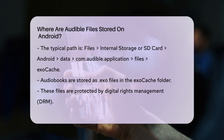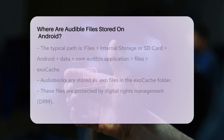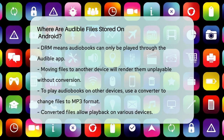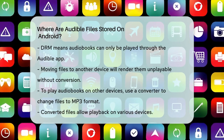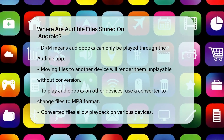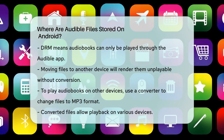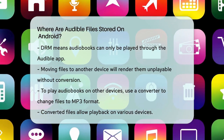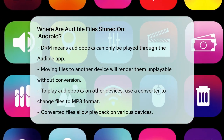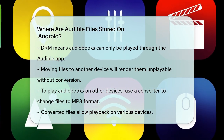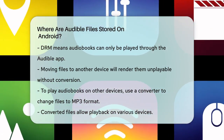However, if you need to move these audiobooks to another device or play them on a different player, you can use a converter to remove the DRM and convert the files to a more universal format like MP3. This way, you can enjoy your audiobooks on any device you want.